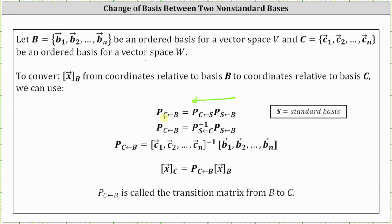However, to find the transition matrix from S to C, we'll have to find the inverse of the transition matrix from C to S. So the transition matrix from B to C equals the inverse of the transition matrix from C to S times the transition matrix from B to S.